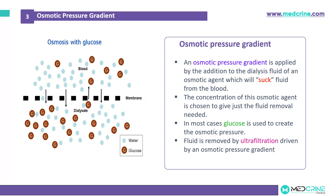Before we go any further, we need to understand what an osmotic pressure gradient is. An osmotic pressure gradient is applied by the addition of a dialysis fluid containing an osmotic agent, which will then draw fluid from the blood. The concentration of this osmotic agent is chosen to give just the fluid removal that is needed. In most cases, glucose is used to create this osmotic pressure, and the fluid removal is achieved by the process known as ultrafiltration, which is driven by the osmotic pressure gradient.